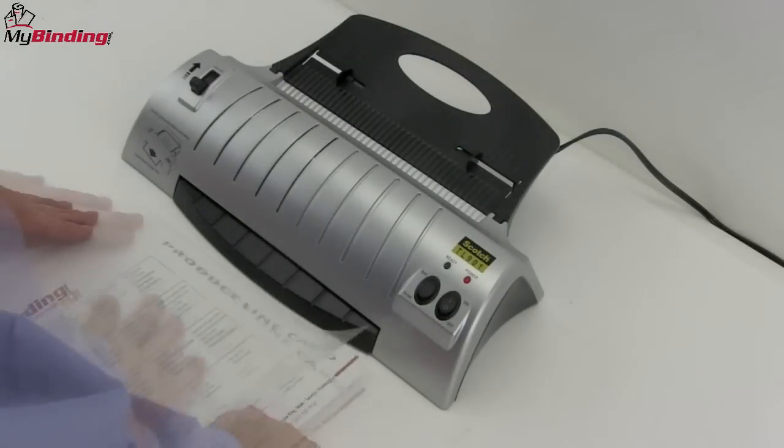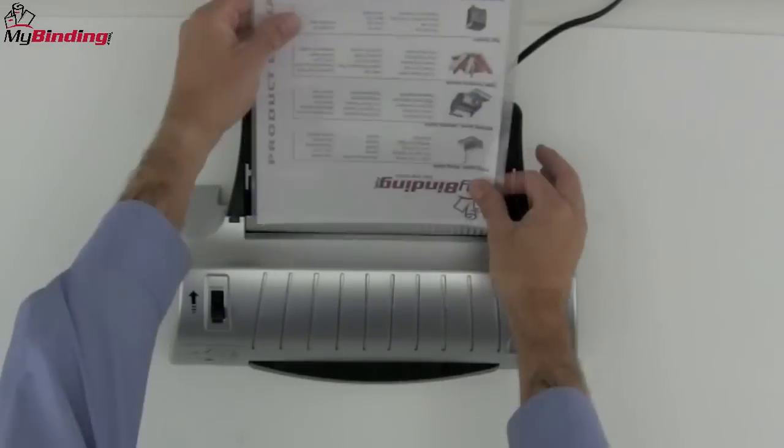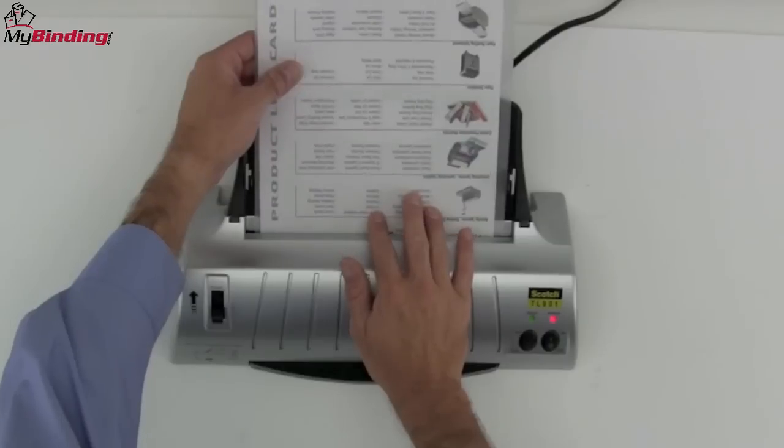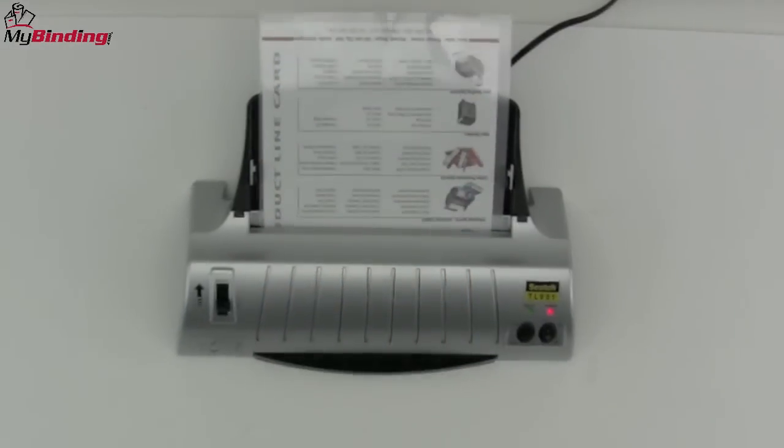Simply place your materials into the pouch all the way up to the crease. Make sure there's nice, good, even margins and place it in. This goes crescent in first but from the top side and not the bottom side like most pouch laminators.